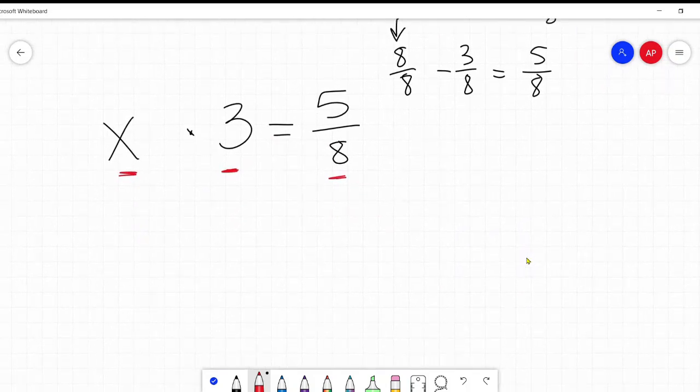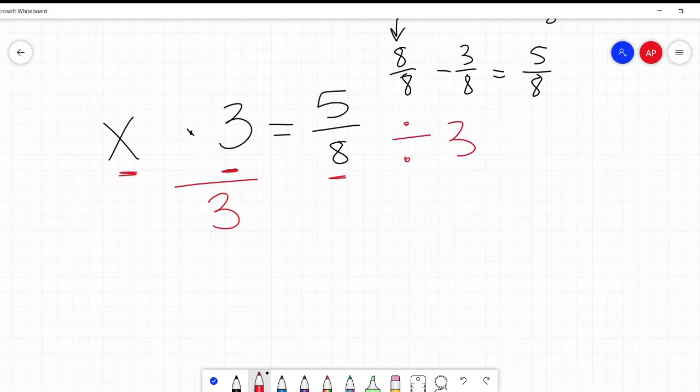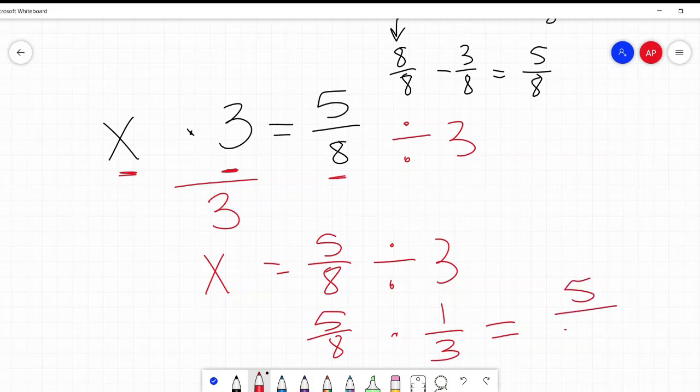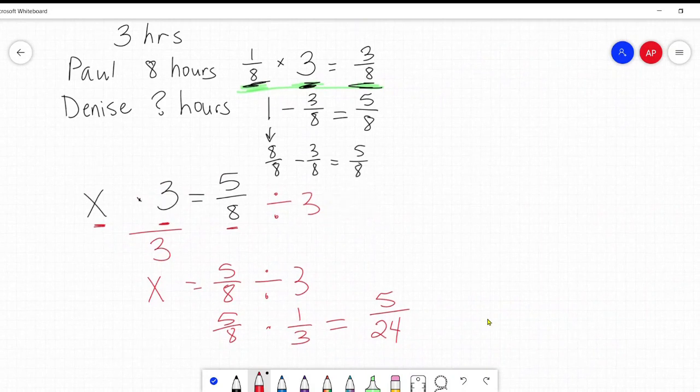So let's now solve for X. So I want to, since this is three times X, I'm going to divide by three. Divide by three. Now I'm going to write it like this on this side. So X equals five eighths divided by three. When we divide a fraction by three, we multiply it by the reciprocal. So this is the same as five eighths times the reciprocal, one over three. There we go. It doesn't do much good if you just change it from divide to times without the reciprocal. So I multiply on top five times one is five, eight times three on the bottom is 24. So now I know that Denise does five 24ths of the task every hour. Okay.